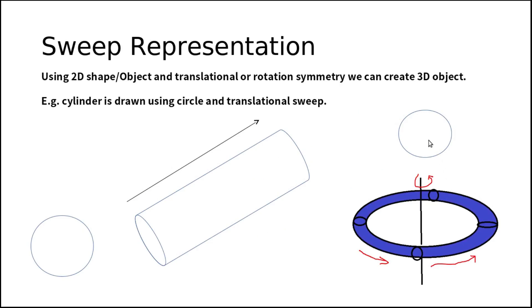Another example: you can take a circle and, using rotational sweep, you can draw the torus shape. So using a 2D object, you are creating a 3D object with the help of symmetry.